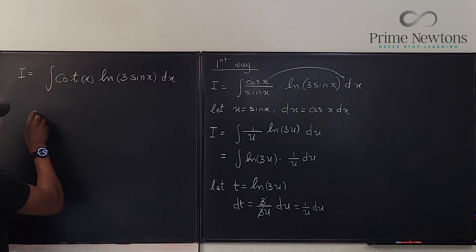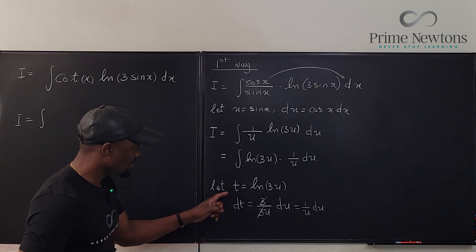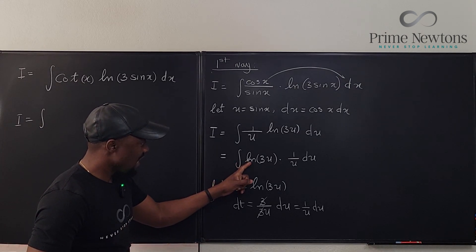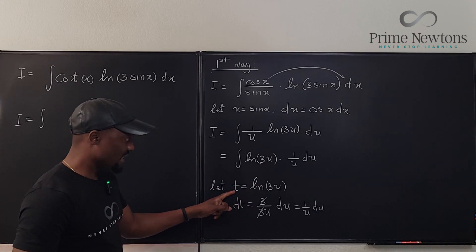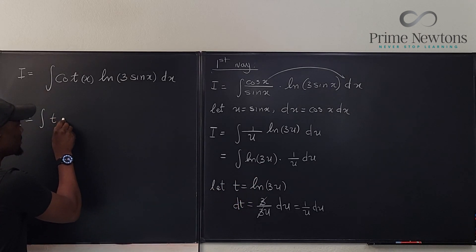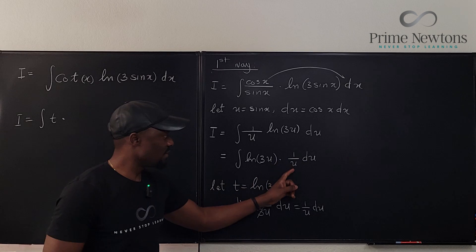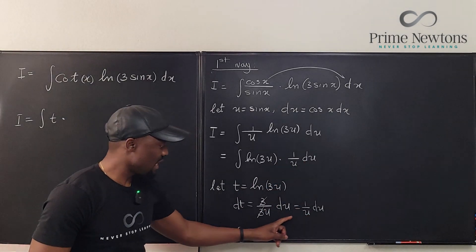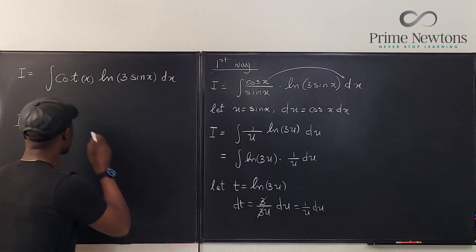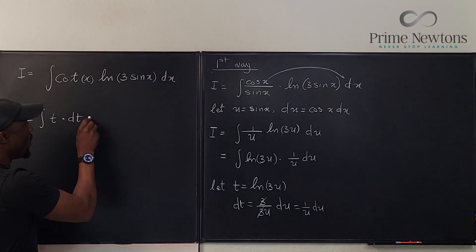This integral I will now be equal to the natural log of—that's t—just t multiplied by 1 over u du, which here is just dt.